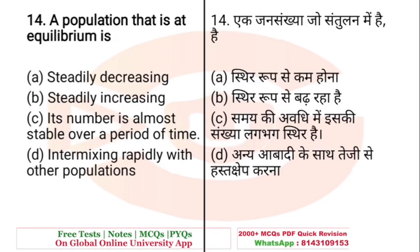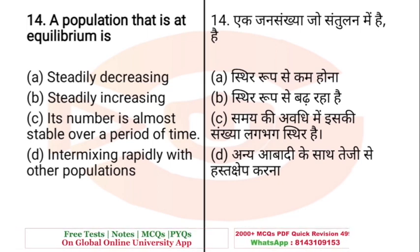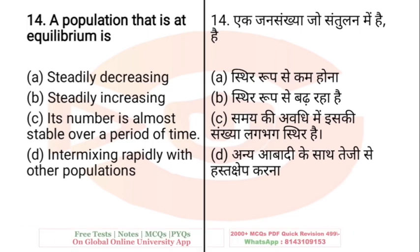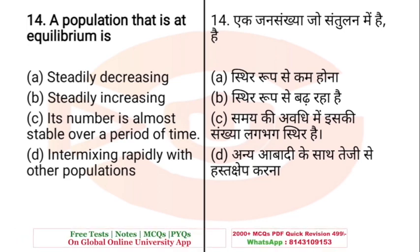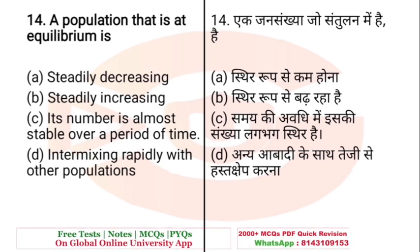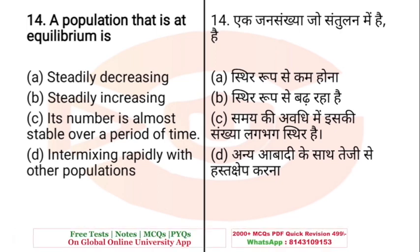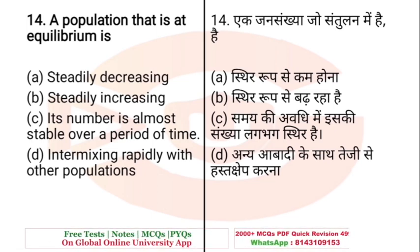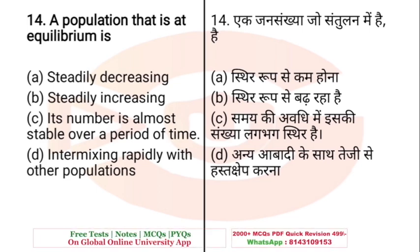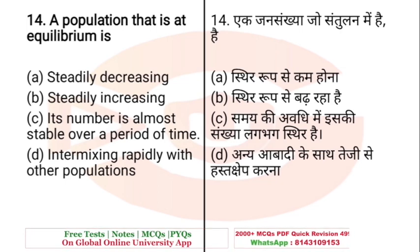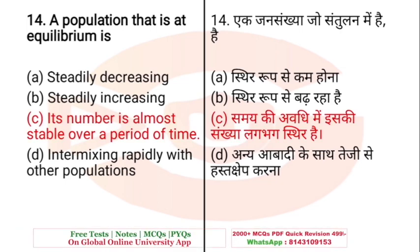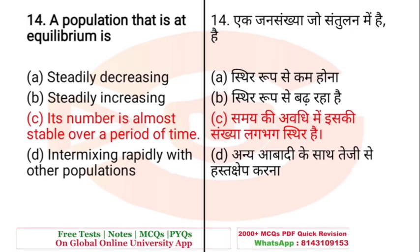Question: A population that is at equilibrium is — A. Steadily decreasing, B. Steadily increasing, C. Its number is almost stable over a period of time, D. Intermixing rapidly with other populations. The right answer is C — its number is almost stable over a period of time.